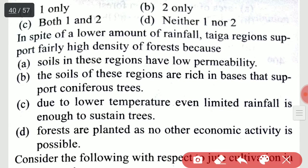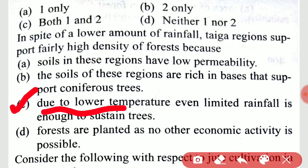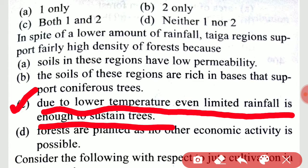In spite of lower amounts of rainfall, taiga regions support fairly high density of forest. This is because due to lower temperature, even limited rainfall is enough to sustain trees.